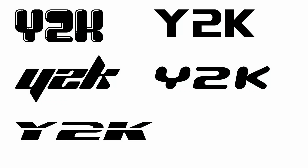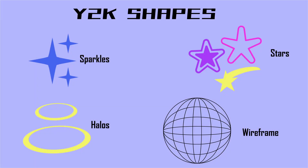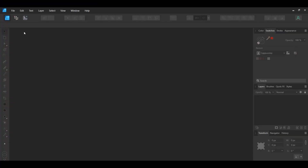The fonts are sometimes thick and chunky. Some are even italicized and have a 3D look to them. Furthermore, Y2K logos have common shapes that are used, such as sparkles, halos, stars, wireframe globes, etc.